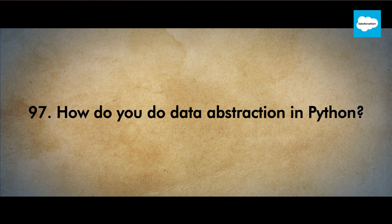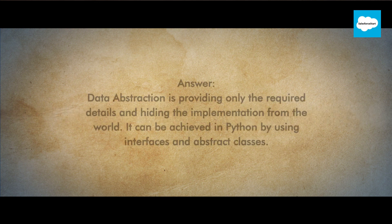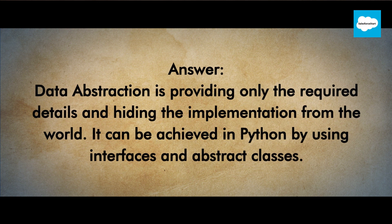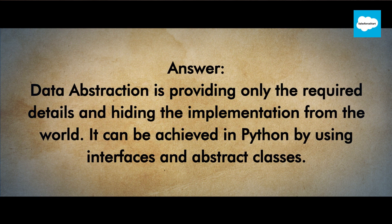How do you do data abstraction in Python? Data abstraction is providing only the required details and hiding the implementation from the world. It can be achieved in Python by using interfaces and abstract classes.